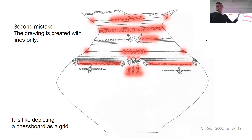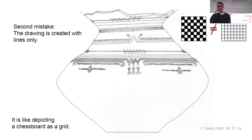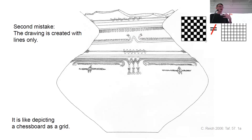This picture shows the second type of mistake: when the illustration is made only by lines, which means the original dark and white contrast is totally ignored. It's like depicting a chessboard with only lines — you get a grid, and with that we lose the concept of the game and cannot understand anything about it.